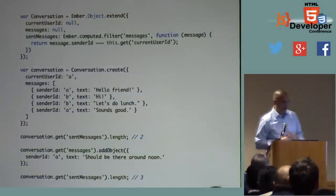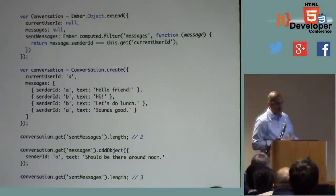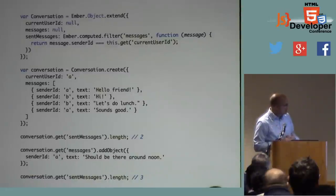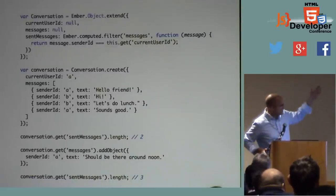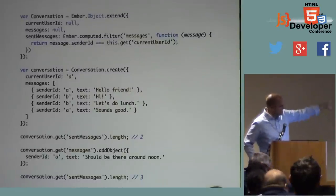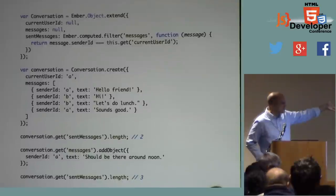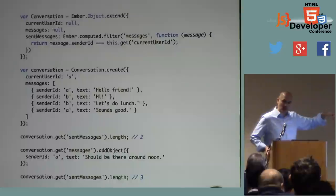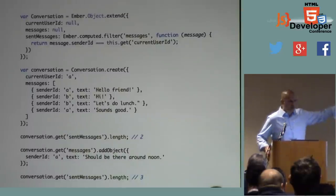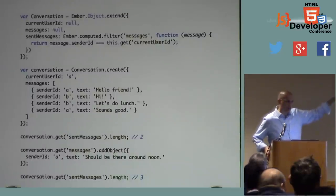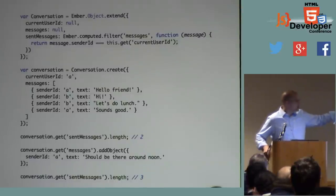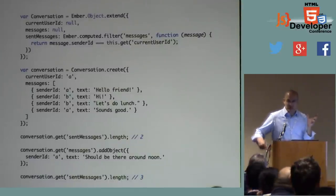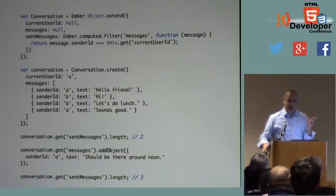Let's look at a filter function — one I use quite often. We've got our conversation object again, now with a current user ID property, a messages property, and a sent messages computed property. This is a filter on the messages property: as messages are added or removed from the messages array, we have another array called sent messages which is a filter on those incremental changes.